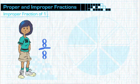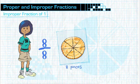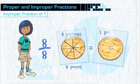Eight over eight or eight eighths is an improper fraction whose value is one. Think about it. If you have a pie cut into eight pieces and you still have all eight, you have one whole pie or one whole unit.